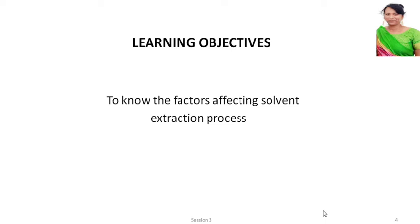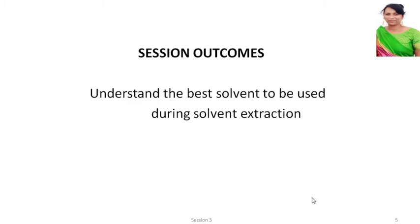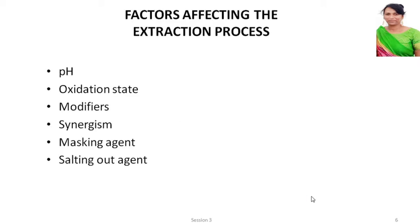In session 3, the learning objective is to know the factors that affect the solvent extraction process. After going through this session, all of you will be able to understand which solvent systems can be used for effective solvent extraction. The factors affecting solvent extraction are: pH, oxidation state, modifiers, synergism, masking agent, and salting out agent. We shall look at them one by one.